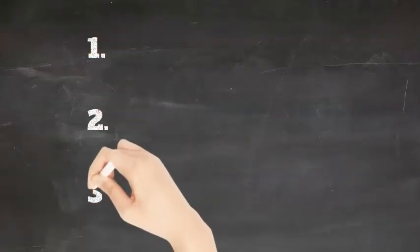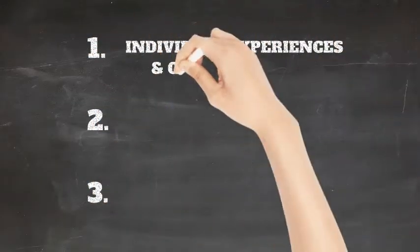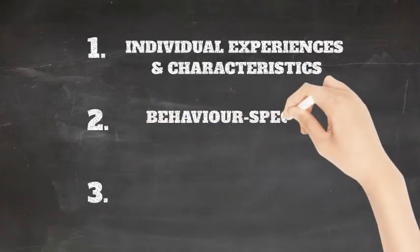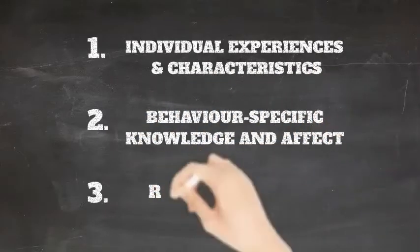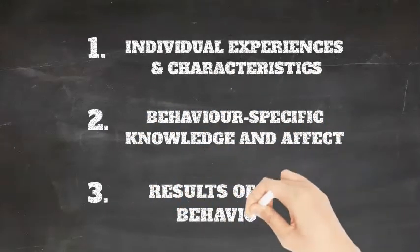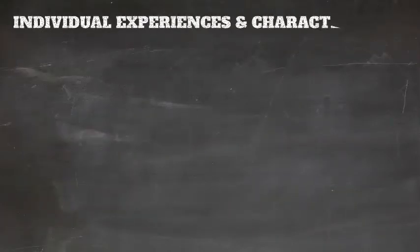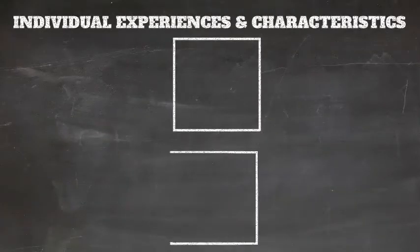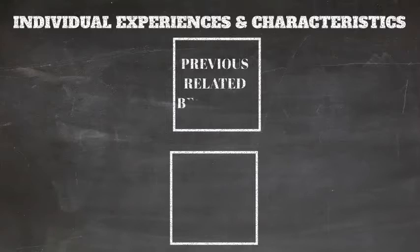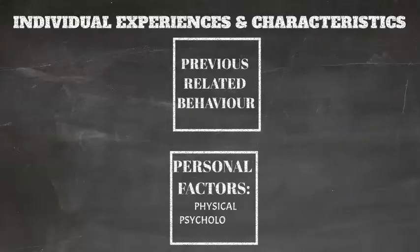The health promotion model has three areas of focus. First is individual experiences and characteristics. Second, behavior-specific knowledge and affect. And the third is results of behavior. Individual experiences and characteristics gives consideration to how past behavior as well as personal factors impact one's ability to engage in health-promoting behavior.